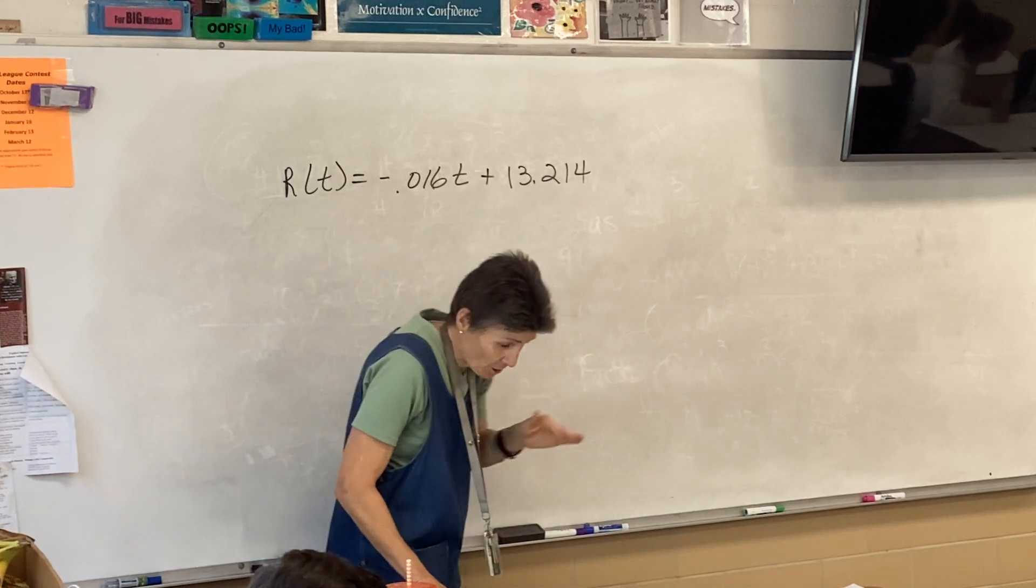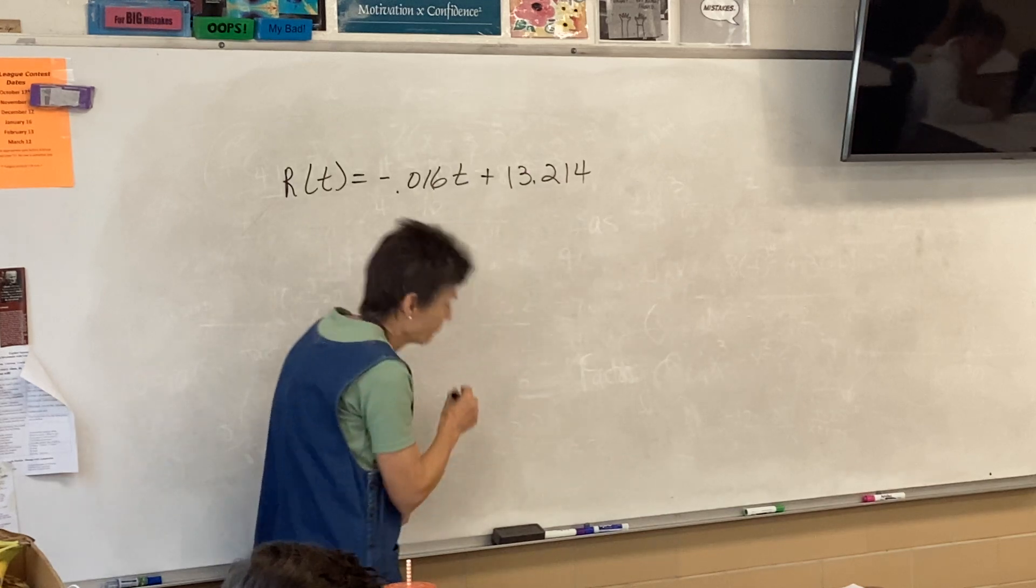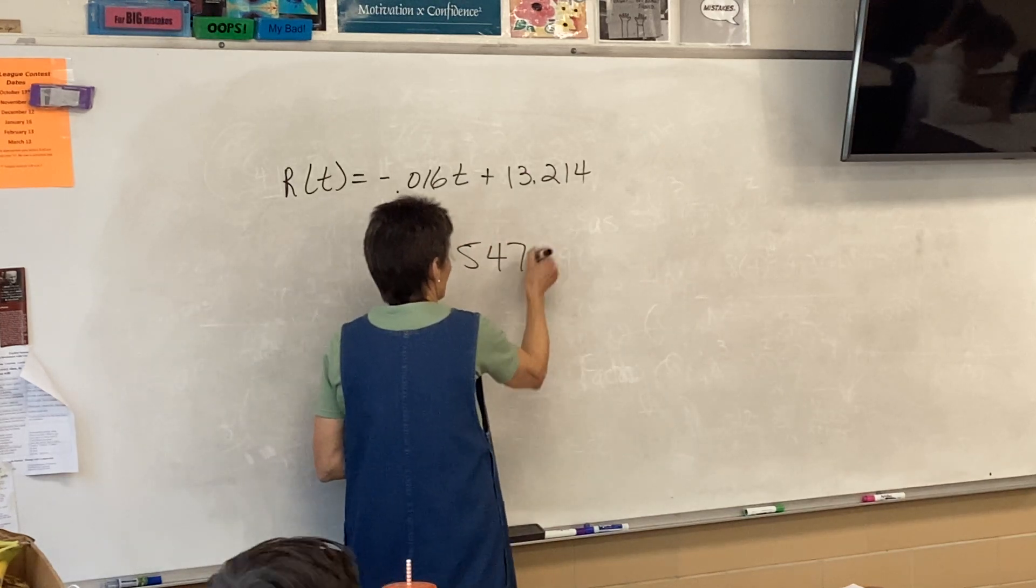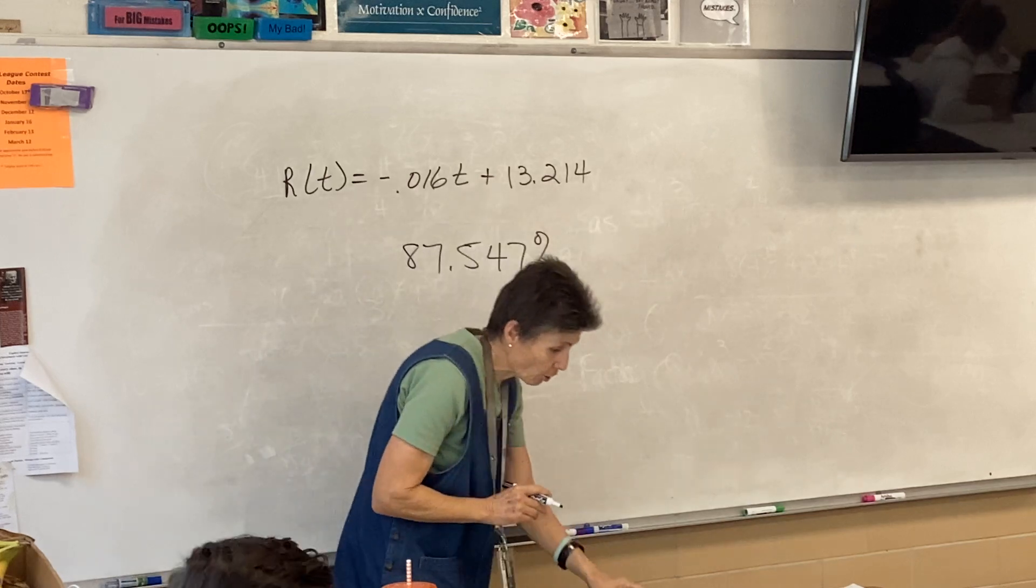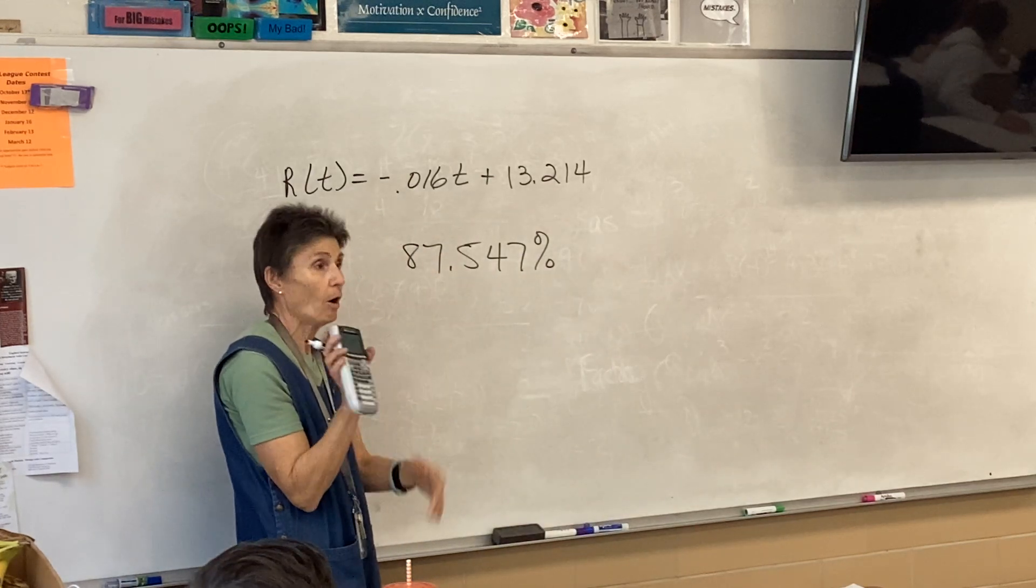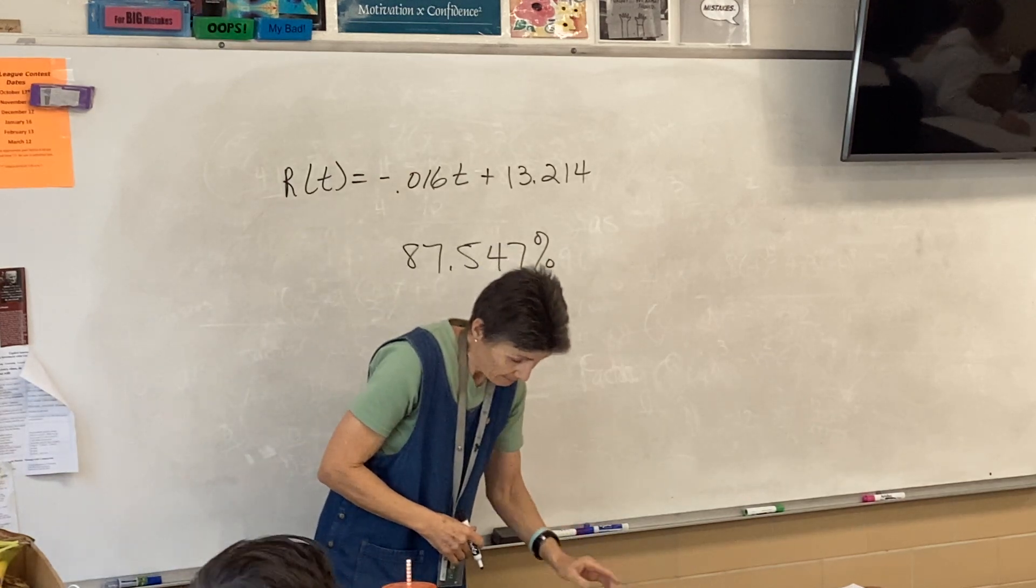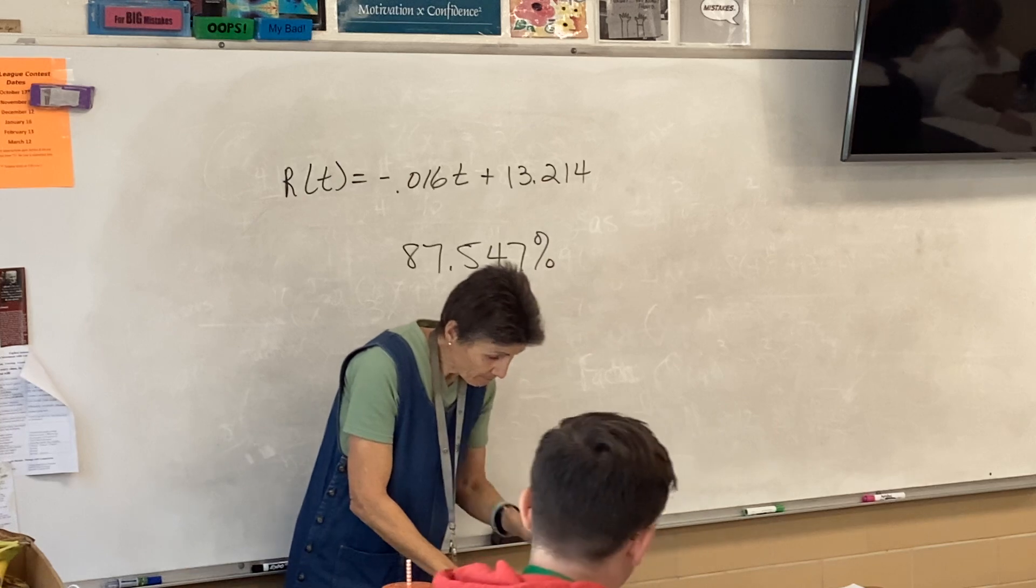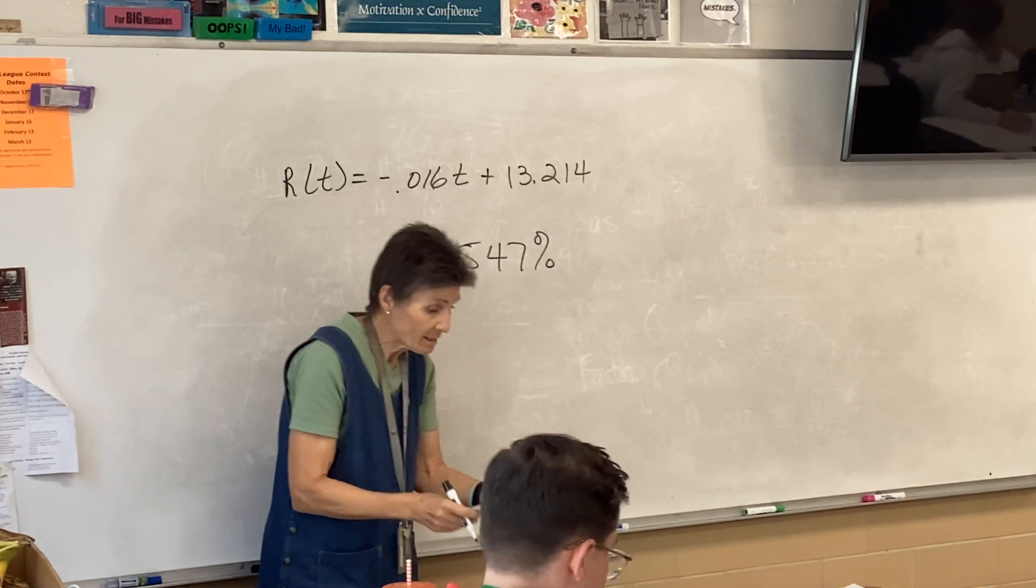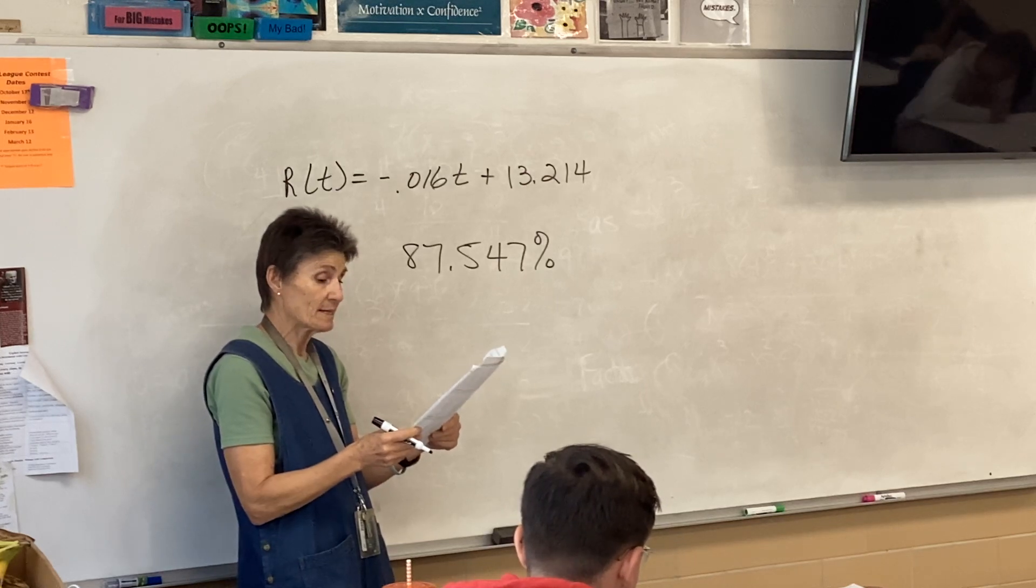And if you didn't get this, then your R squared is going to be different. But if you got this, your R squared is 87.547. That is the R squared number, yeah, right off of the calculator, the R squared. And then, what is R of 60, and what does this mean?